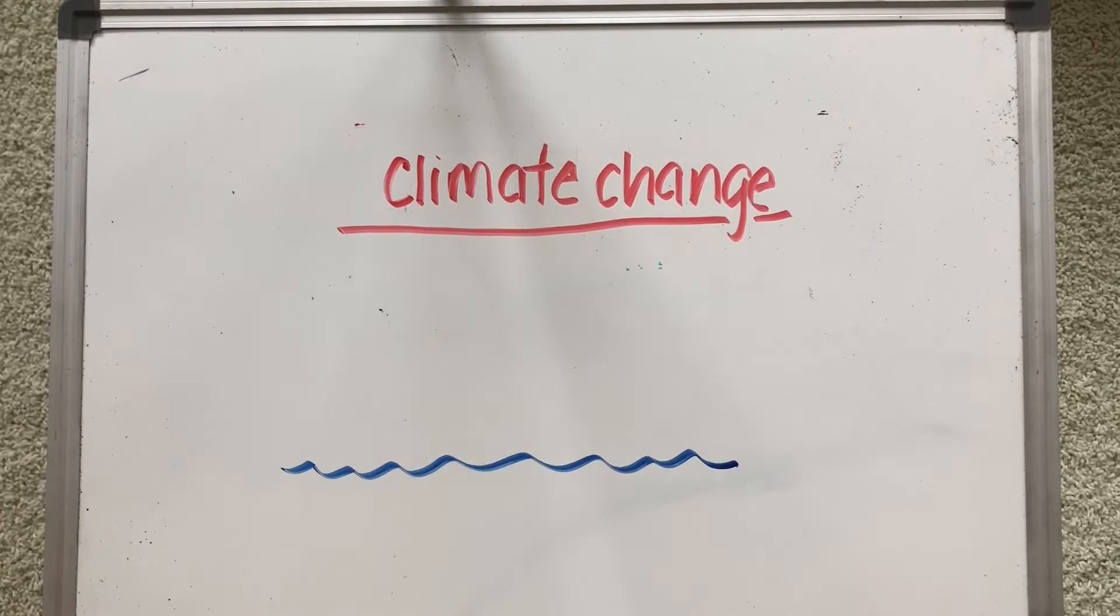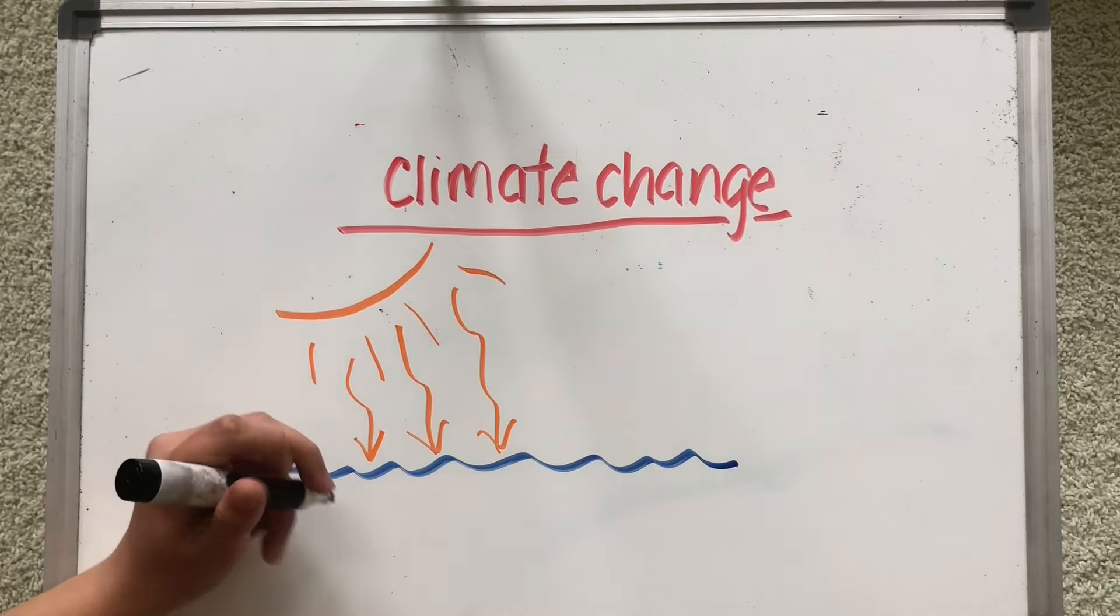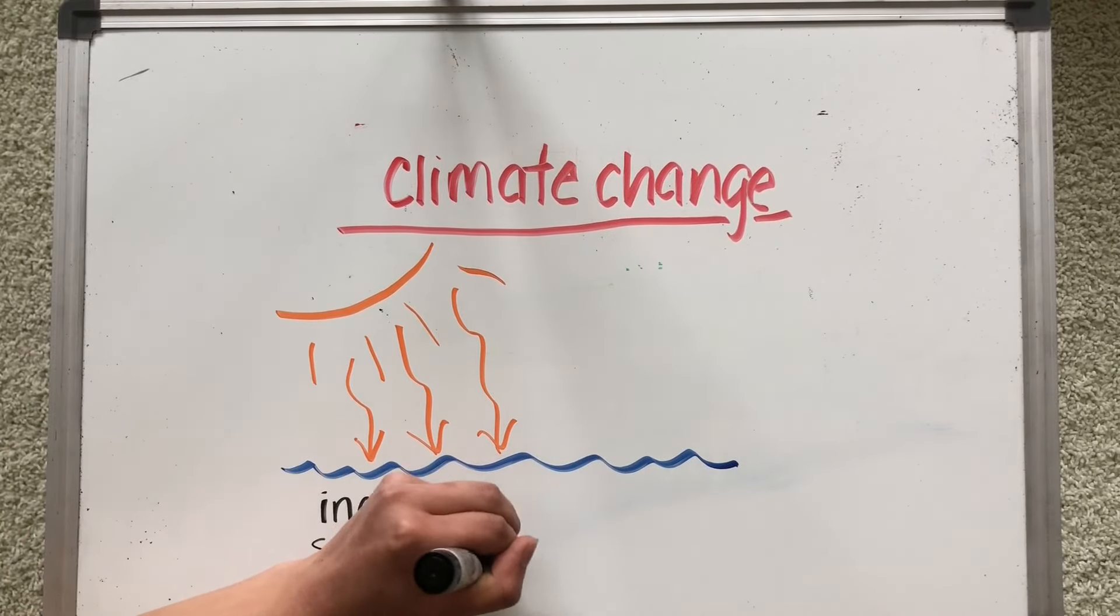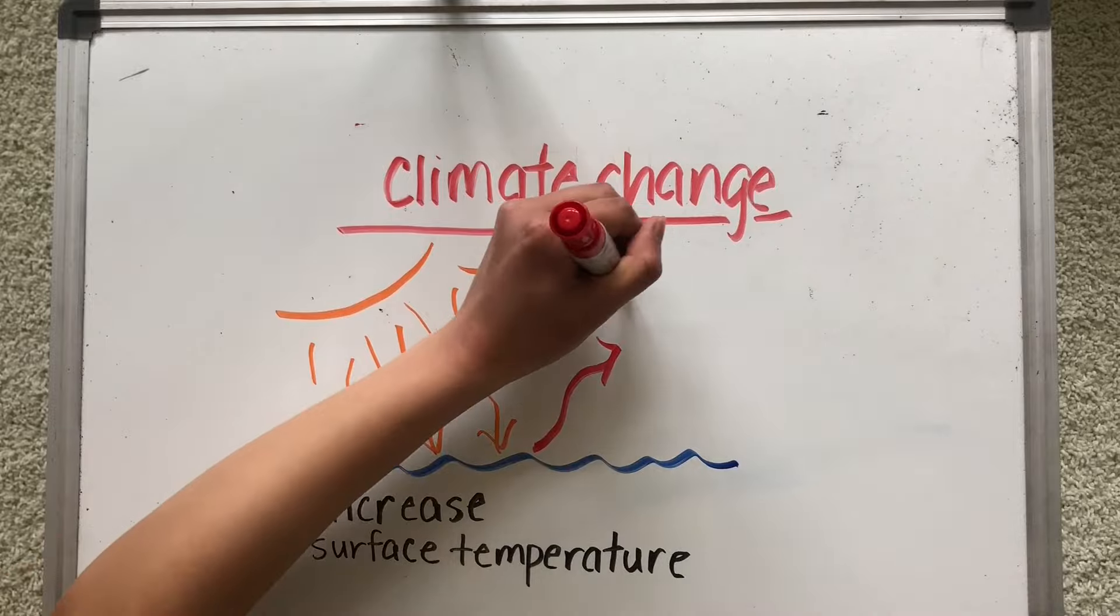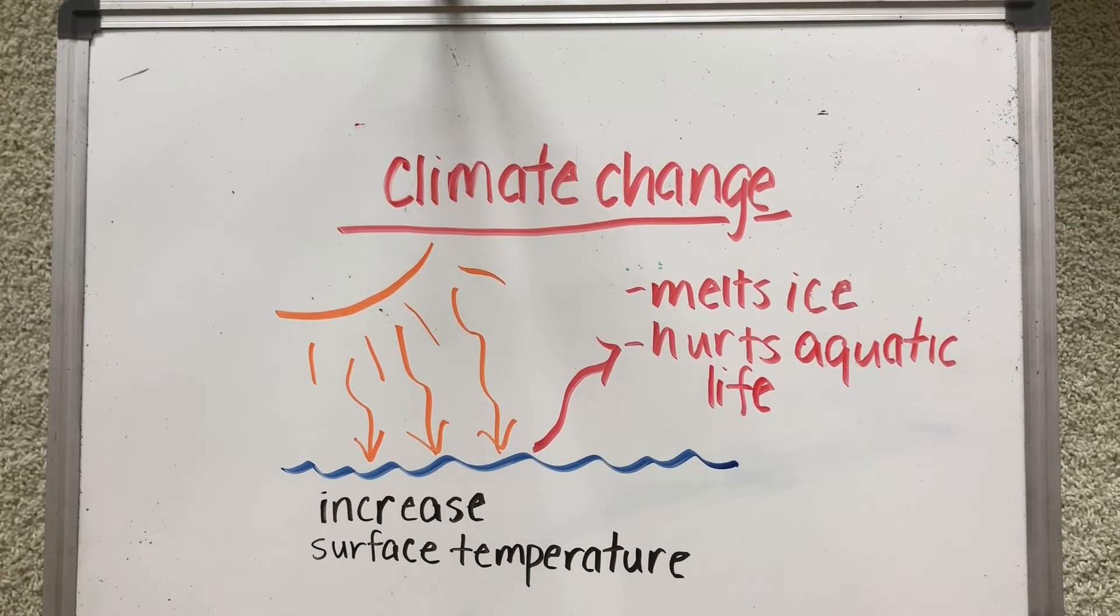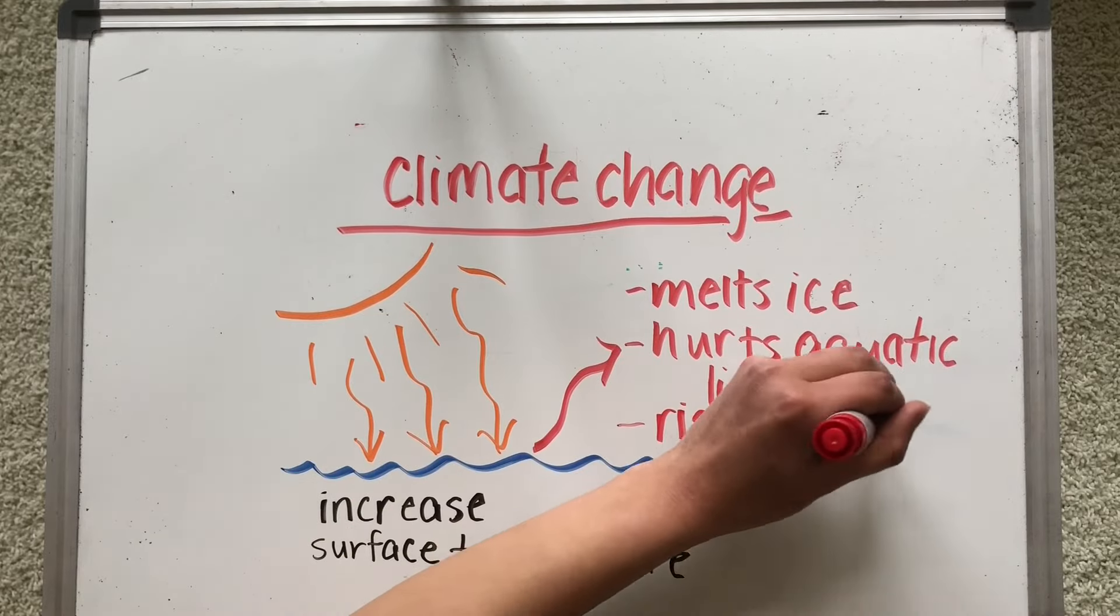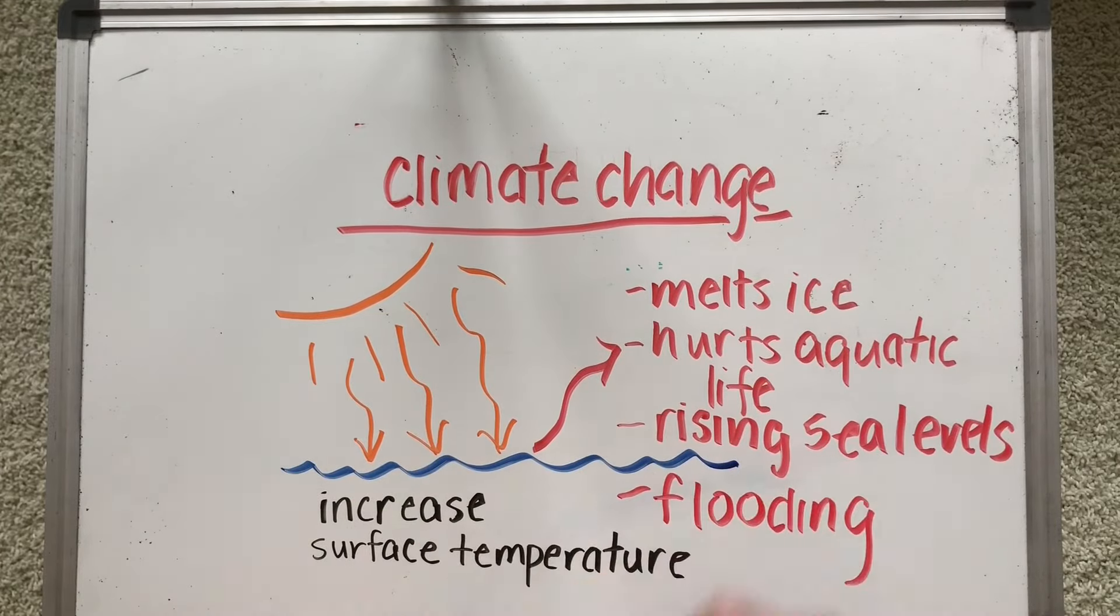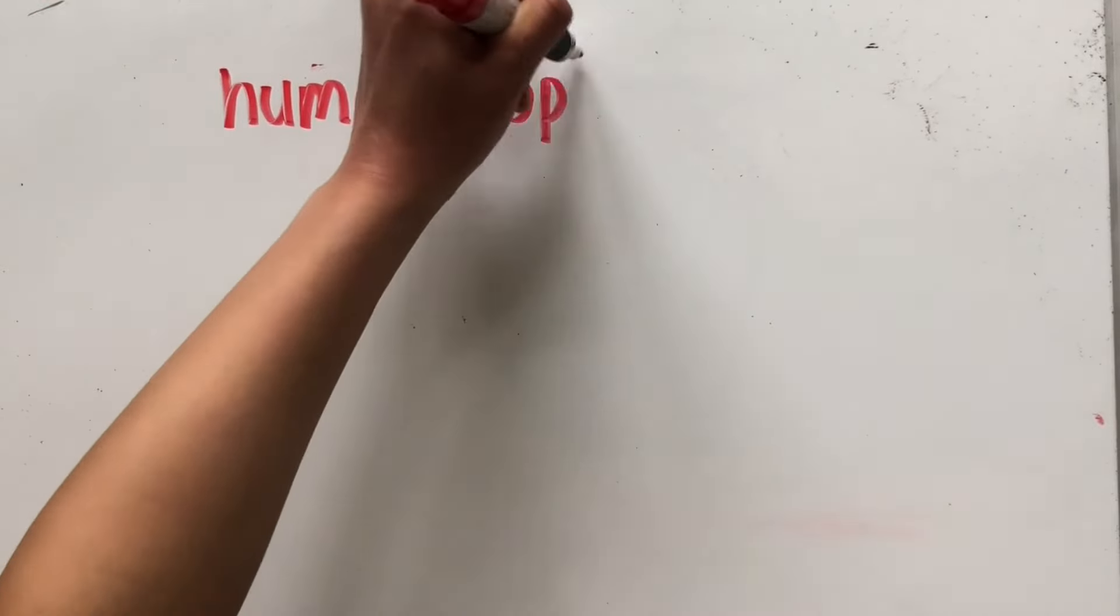Another negative impact humans have had on the earth is climate change. Climate change causes the temperature of the surface of our oceans to rise, which can melt our ice, hurt aquatic sea life, and raise ocean levels. This can also cause severe flooding.